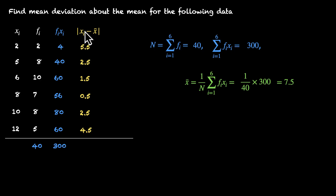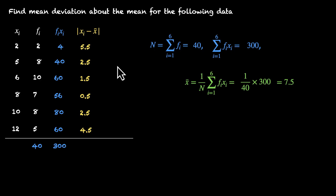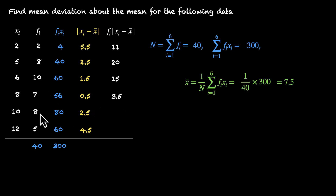Now let's multiply these deviations by their frequencies to create a Fi·|Xi − X̄| column. Because 2 appears twice, its deviation 5.5 also appears twice. So: 2 × 5.5 = 11, 8 × 2.5 = 20, 10 × 1.5 = 15, 7 × 0.5 = 3.5, 8 × 2.5 = 20, and 5 × 4.5 = 22.5.